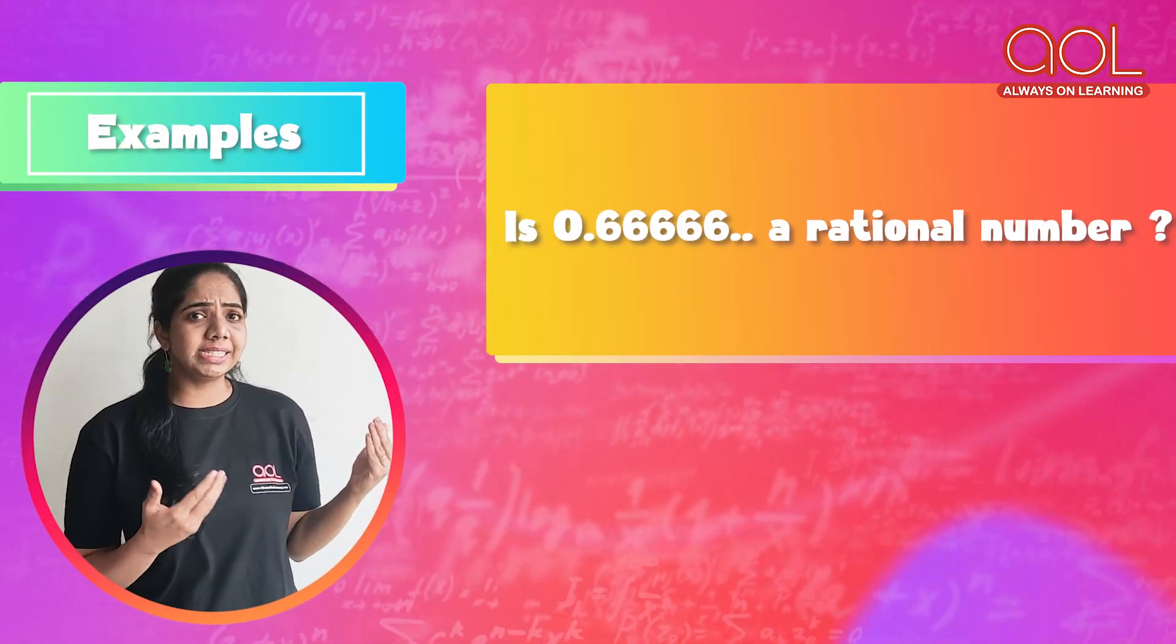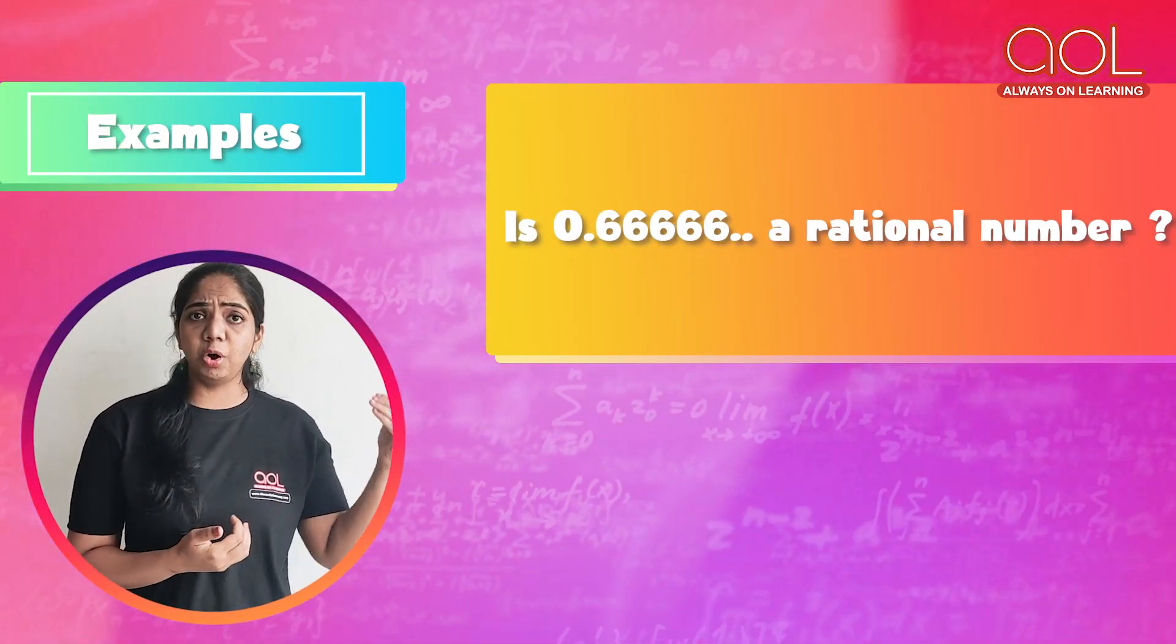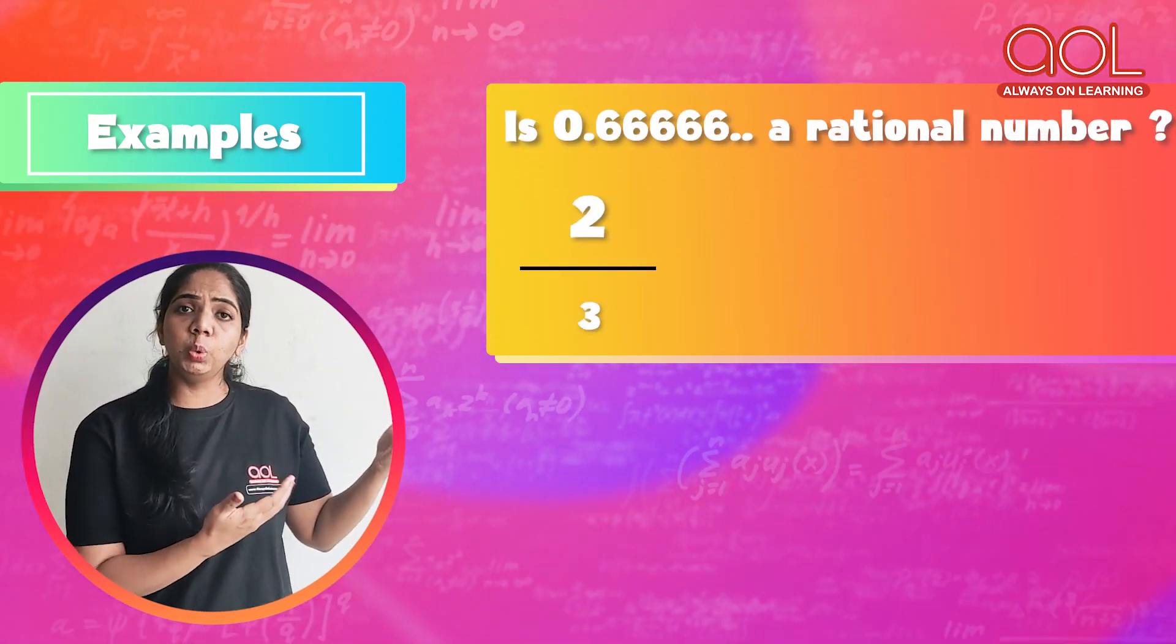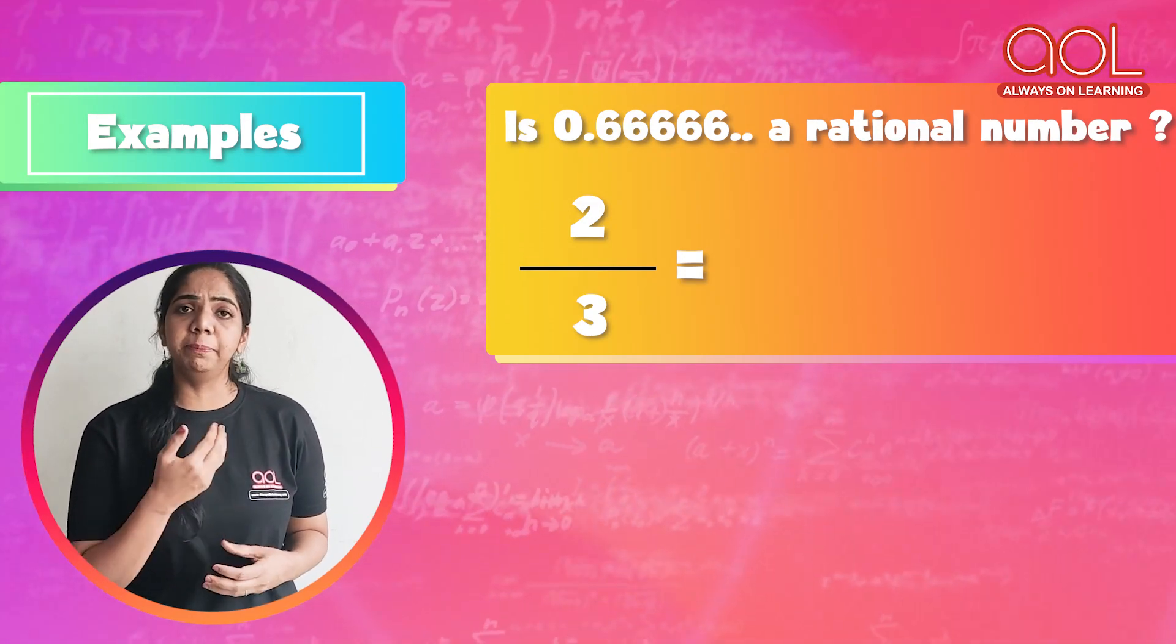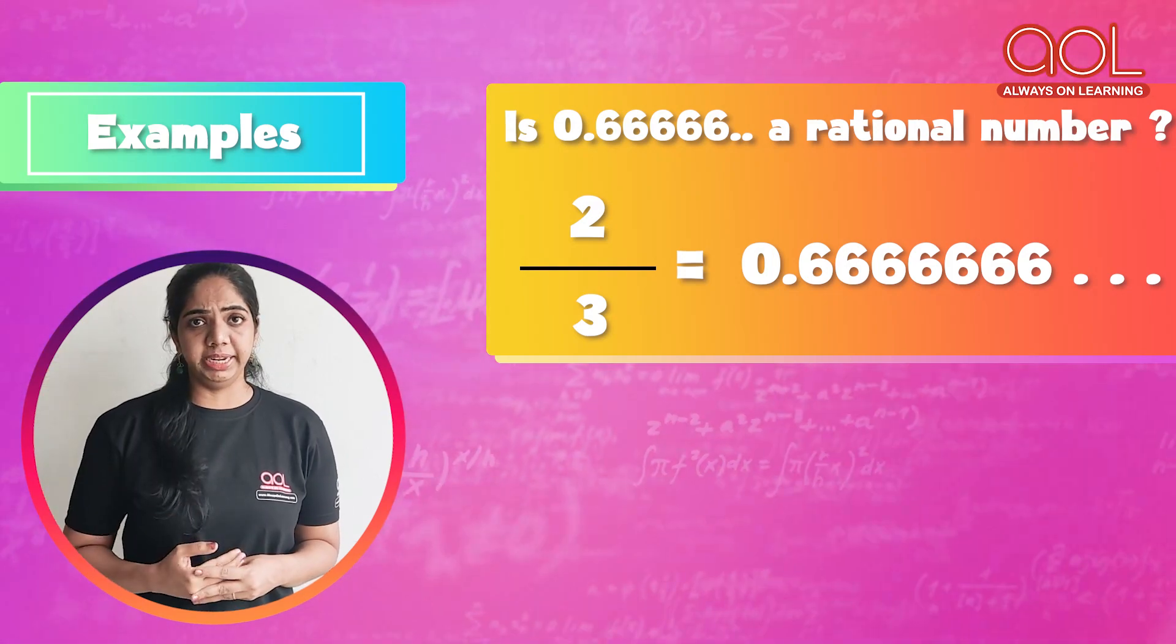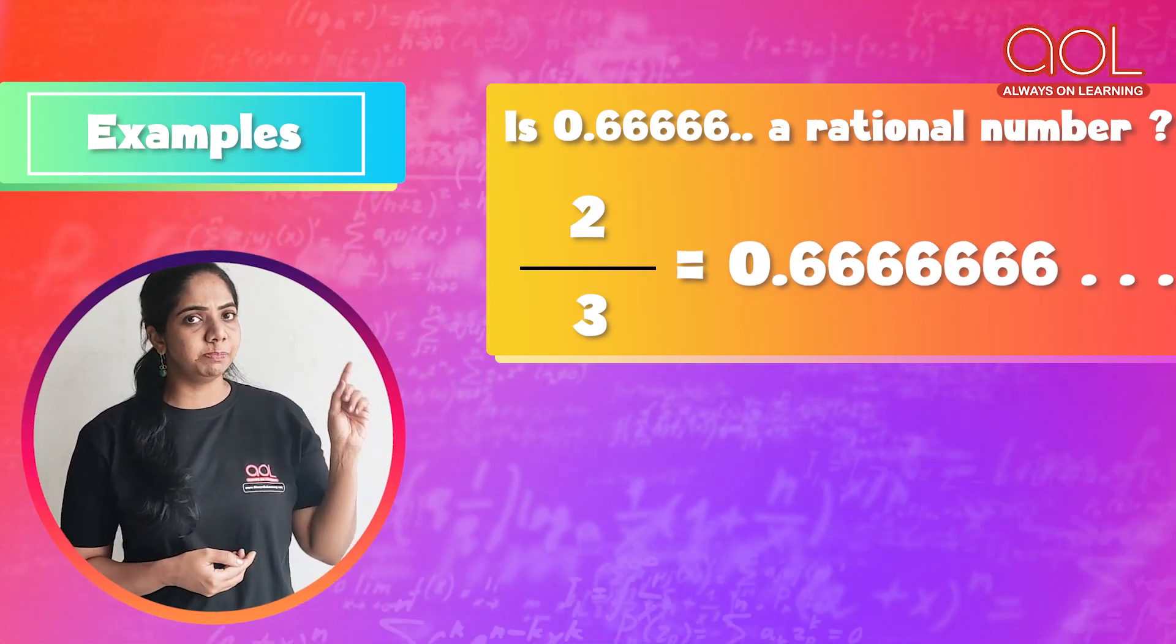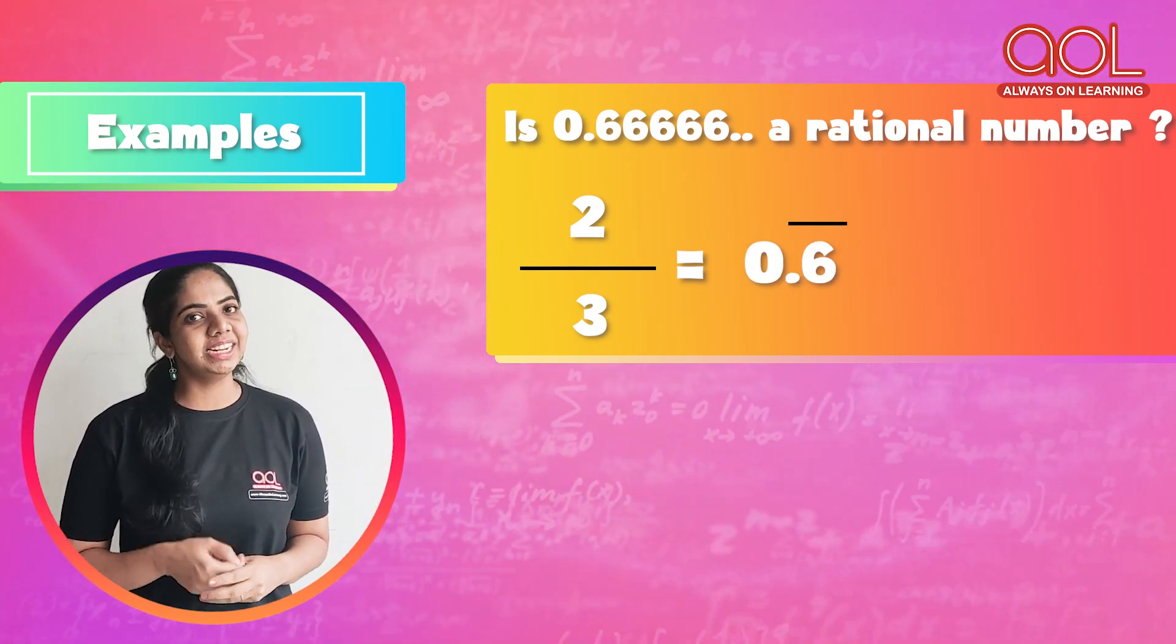Tell me is 0.66666 a rational number? 0.666 is something that you get by dividing 2 by 3. If you divide 2 divided by 3, you get 0.66666. It is also non-terminating but it is recurrent.